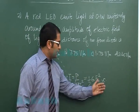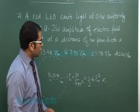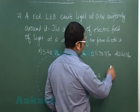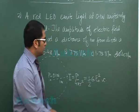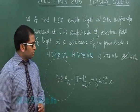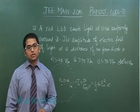So with this particular thing if you solve, then you'll be getting the value of E naught to be 2.45 volt per meter. So that was about question number two. Let's proceed to question number three.